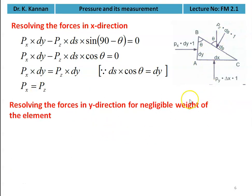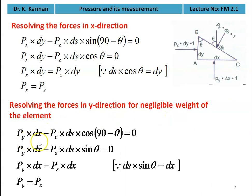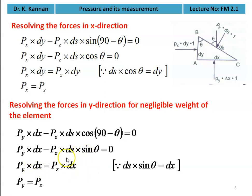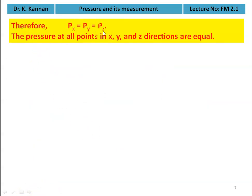Resolving forces in the y-direction with negligible weight of the fluid element: py·dx − pz·ds·cos(90−θ) = 0. Since cos(90−θ) = sin(θ) and ds·sin(θ) = dx, we get py·dx = pz·dx, and cancelling dx gives py = pz. Since px = pz and py = pz, we conclude px = py = pz.